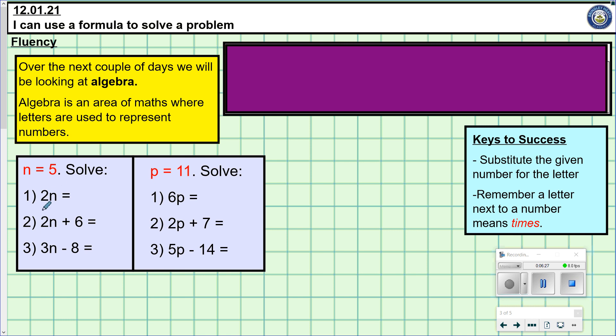where you get a number and a letter next to each other, that means times or lots of. So, it's saying what is 2 lots of n? Well, n is 5. What's 2 lots of 5? 2 lots of 5 is 10. So, where it says 2n, all it's asking is 2 lots of or 2 times. And we just put the number into the sequence. So, 2 times 5 is 10.